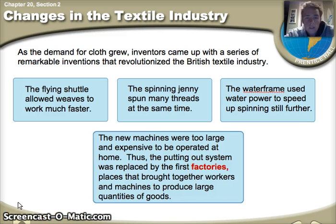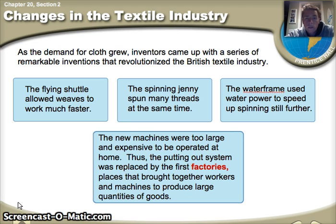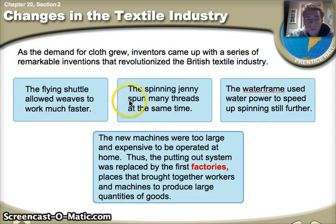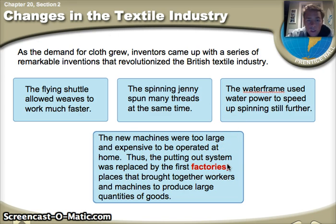The demand for quality grows so much in Great Britain that inventors have to come up with new ideas — there's just too much demand and people can't produce enough cotton products. Some of the new inventions that come about are the flying shuttle, which allows weavers to work much faster; the spinning jenny, which could spin several threads at the same time rather than one; and the water frame, which uses water power to speed up the spinning still further. The new machines were too large and expensive to be operated at home, so the putting-out system was replaced by the first factories.